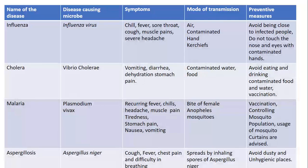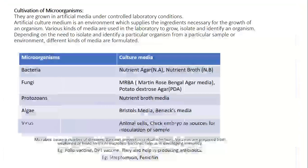Aspergillosis is caused by Aspergillus niger. Symptoms include cough, fever, chest pain, and difficulty in breathing. The mode of transmission is by inhaling spores of Aspergillus niger. Prevention includes avoiding dusty environments and places where spores may be inhaled.